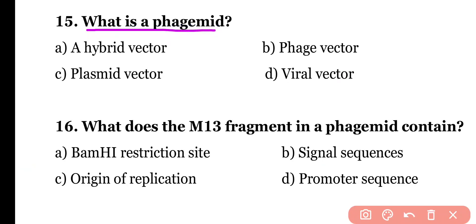Question 15: Phagemid is an example of which type of vector? Hybrid vector, phage vector, plasmid vector, or viral vector. Correct answer is option A. Phagemid is a hybrid vector of M13 phage and plasmid PBR-322.